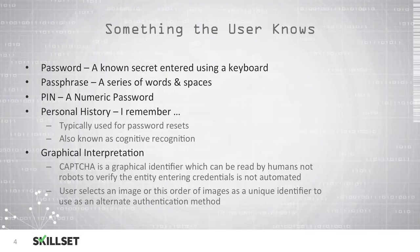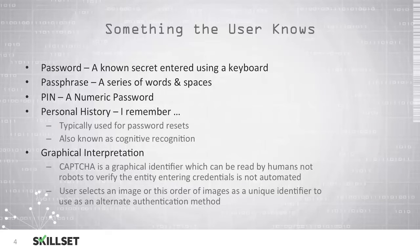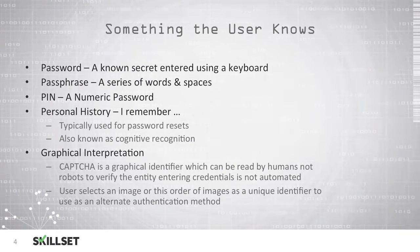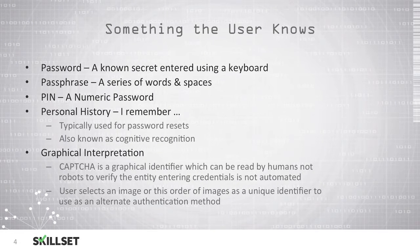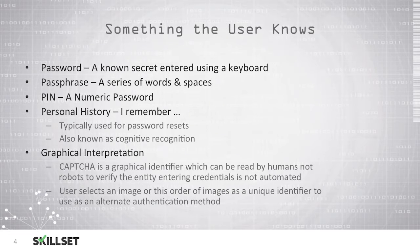We also have personal history questions, typically used for password resets if you don't remember your password — questions like what was my first pet's name or what was my first job. These are also known as cognitive recognition. We also have graphical interpretation. A CAPTCHA is a graphical identifier presented to a human, and only a human should be able to read the characters. This is typically done to ensure that a robot is not attempting to log in multiple times and to verify that there is an actual person sitting at the computer.